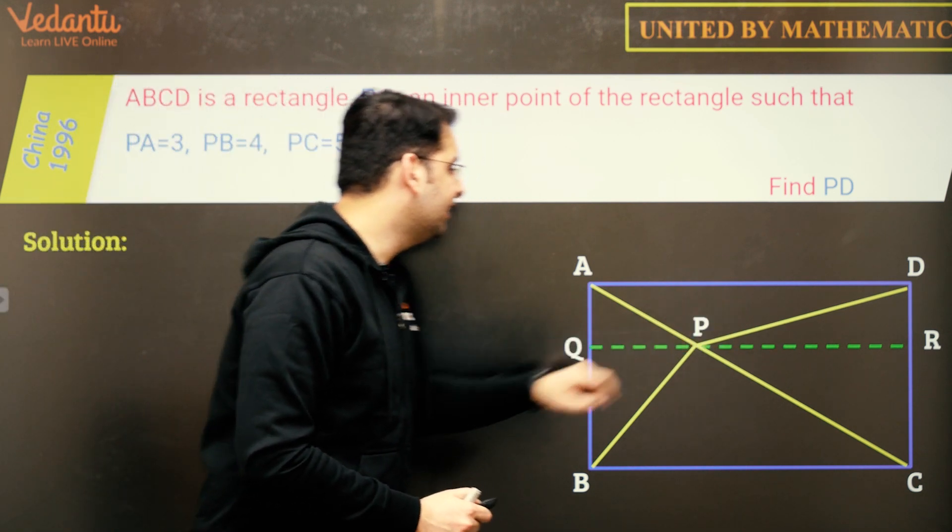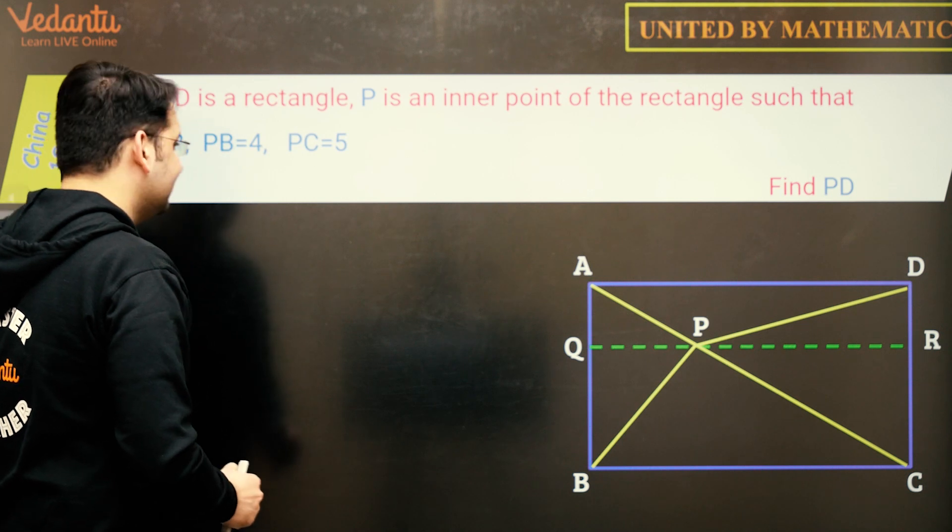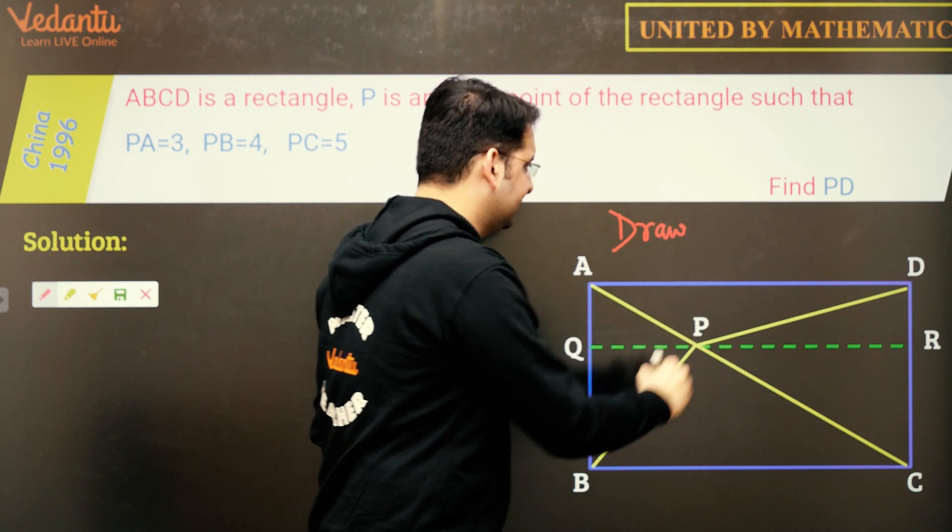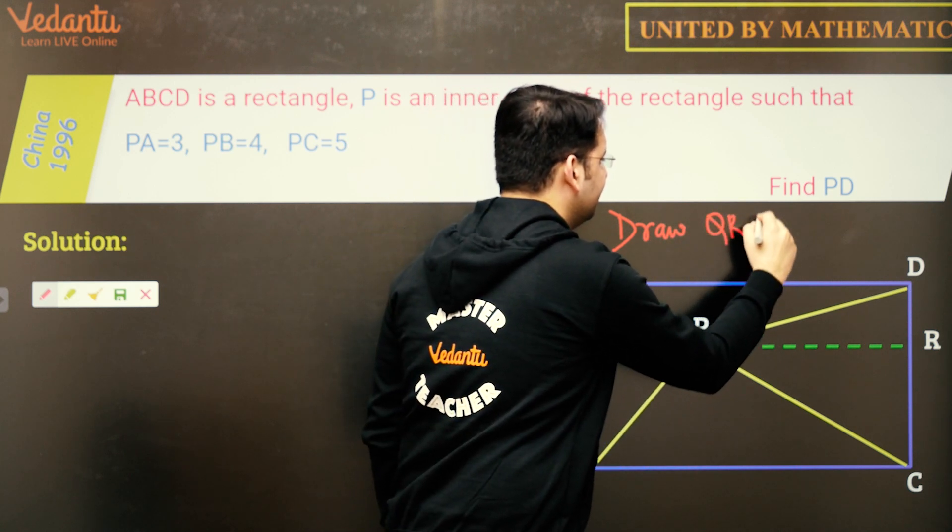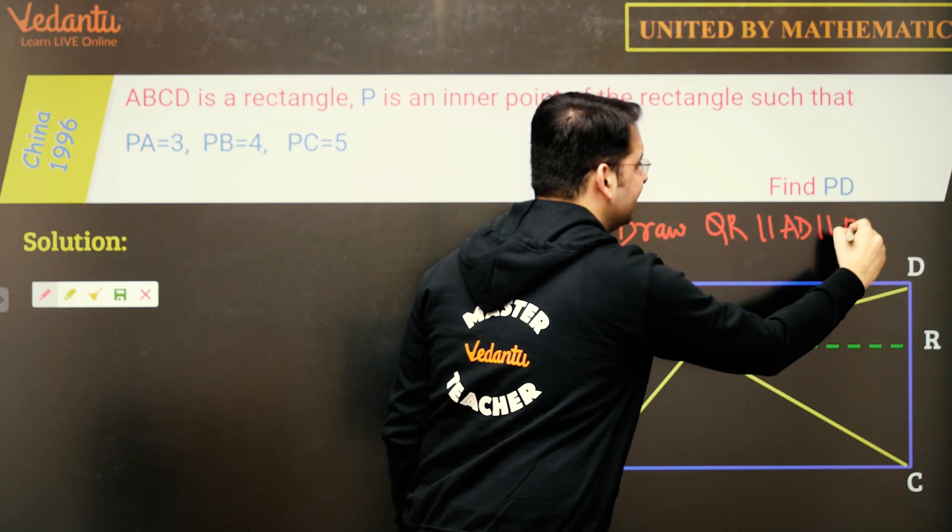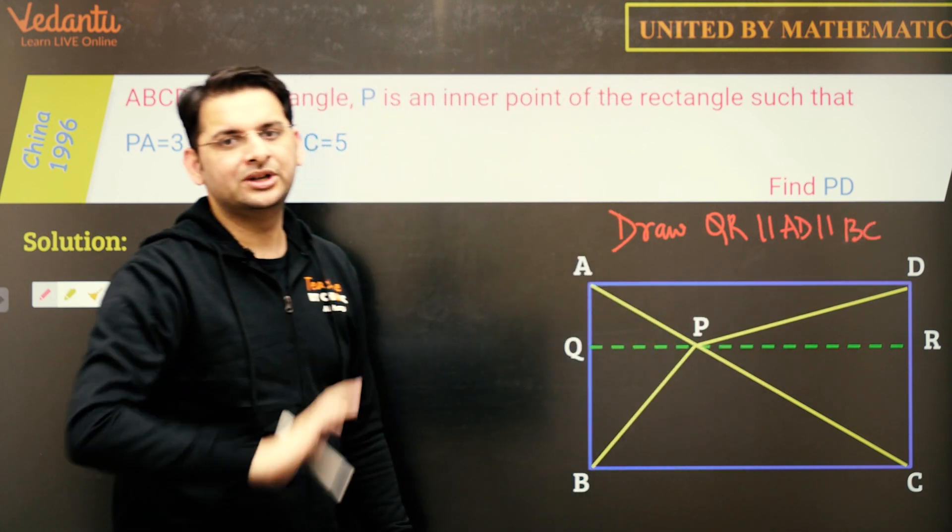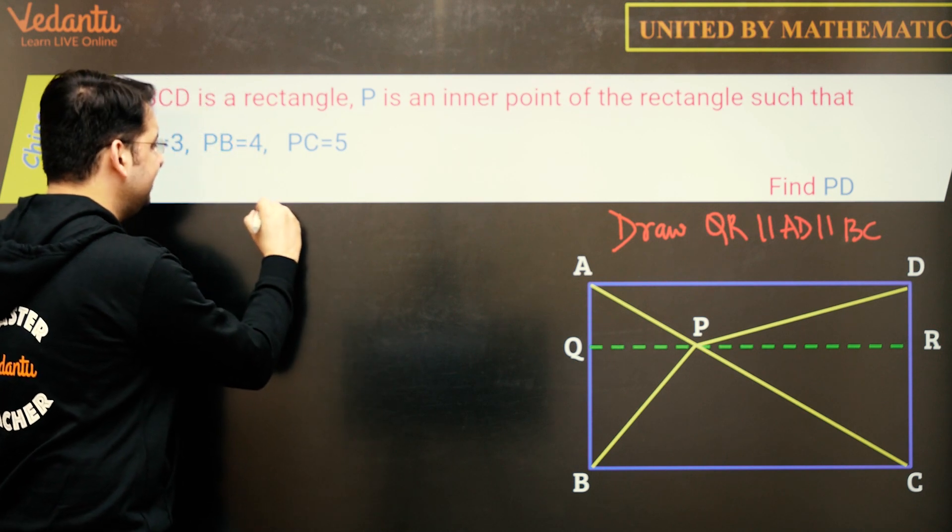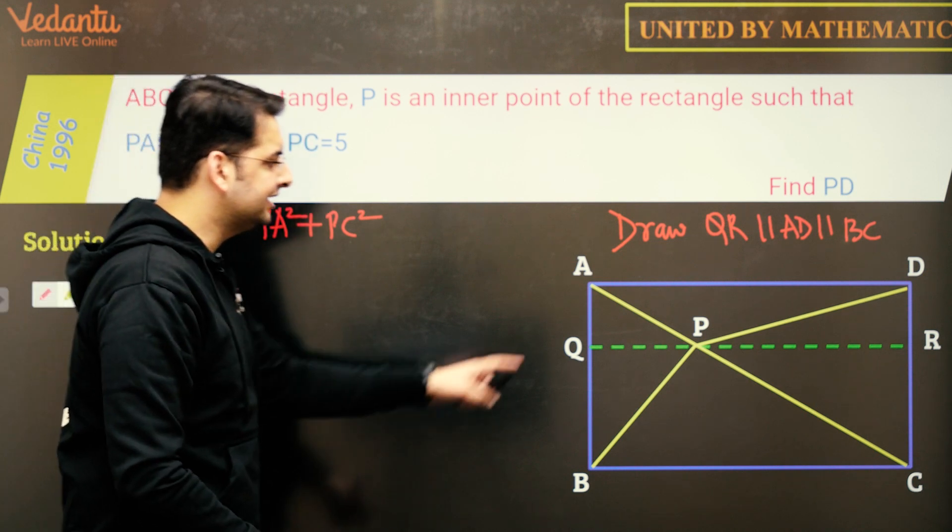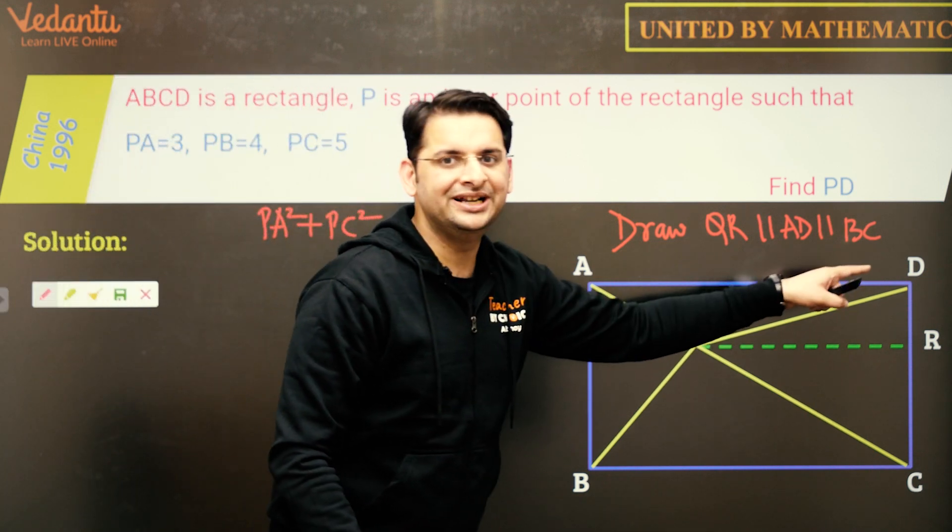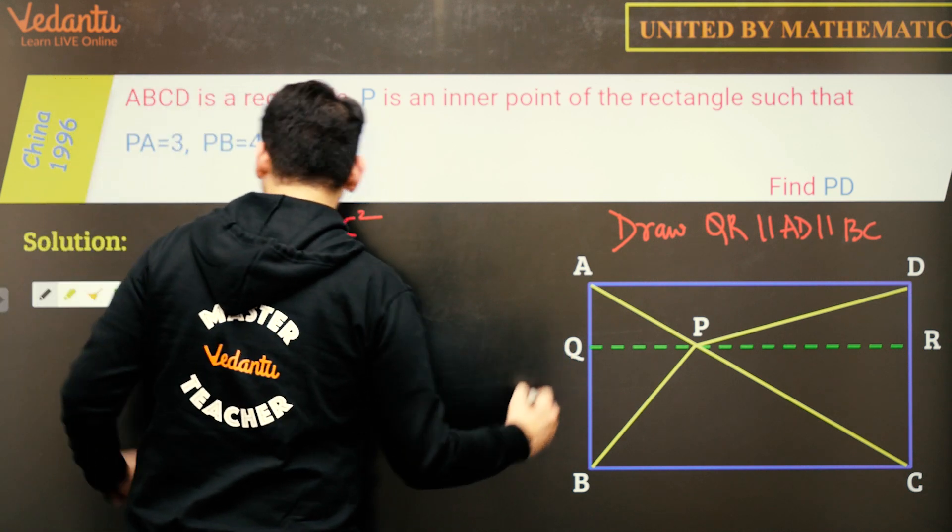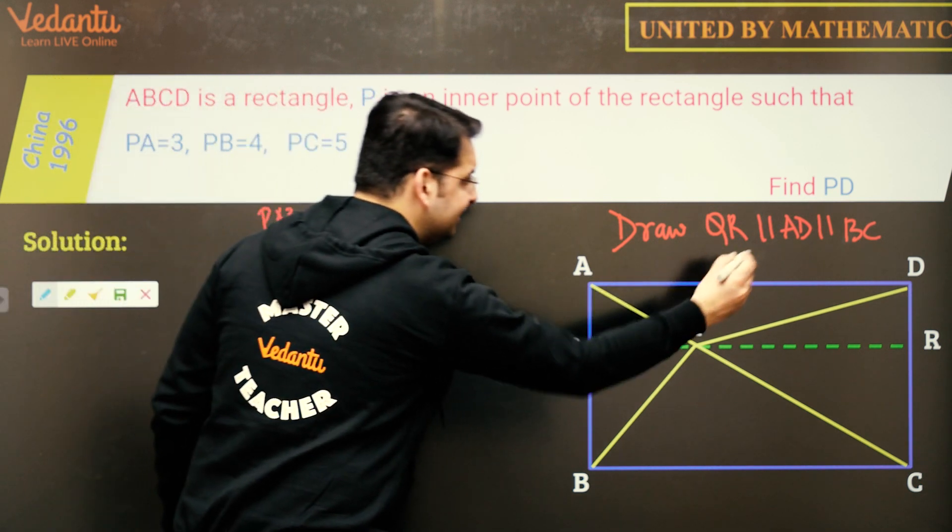We draw a line QR parallel to AD. So draw the line QR parallel to AD which of course is parallel to BC and will apply Pythagoras theorem. So the claim is PA square plus PC square, this is equal to PB square plus PD square.